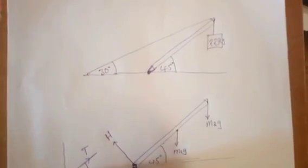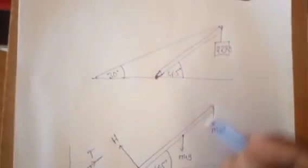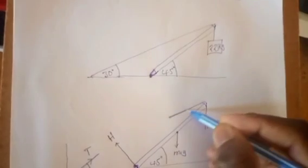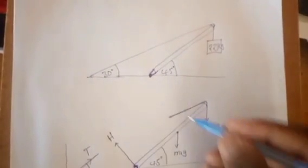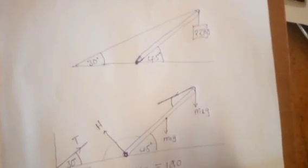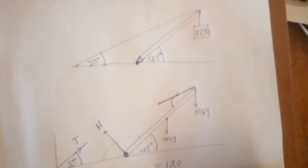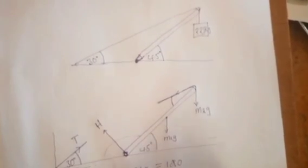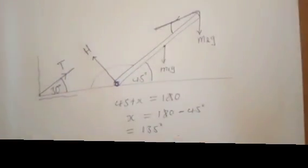The tension is attached at a 30-degree angle. We need to find the angle to resolve the force produced by the tension from the object. We can find this angle by noting that 45 plus x equals 180 because this is a straight line, giving us 180 minus 45 degrees, which is 135 degrees.